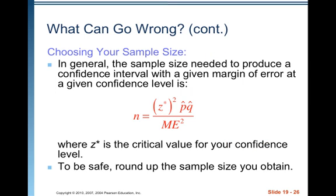Choosing your sample size: in general, the sample size needed to produce a confidence interval with a given margin of error at a given confidence level is n = z*² × p-hat × q-hat / ME². You need to memorize this formula with either ME isolated or n isolated. Round up the sample size you obtain — for example, if you get 72.01, round up to 73.